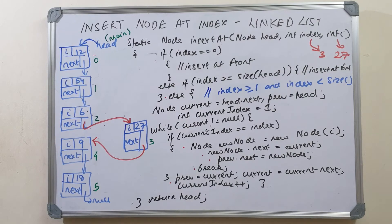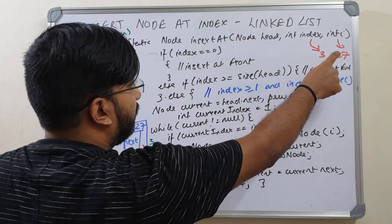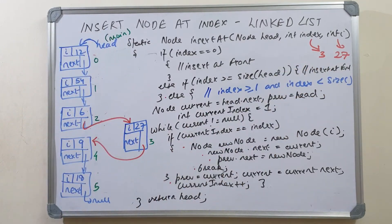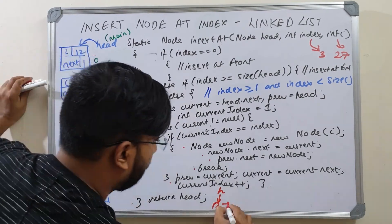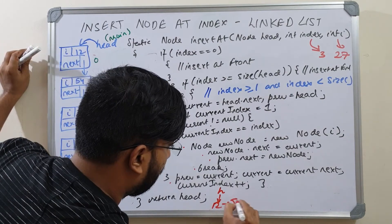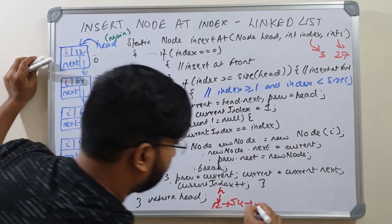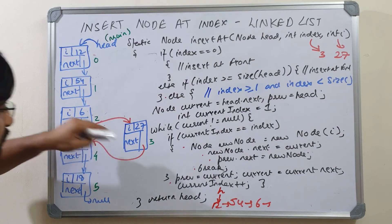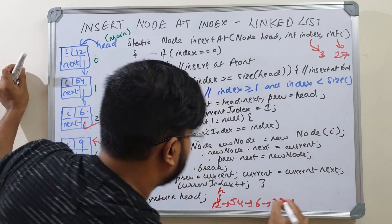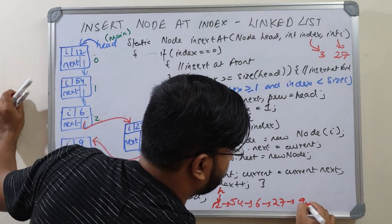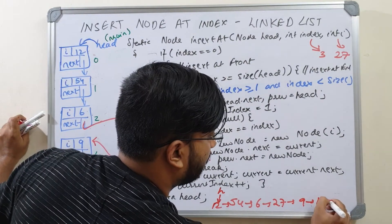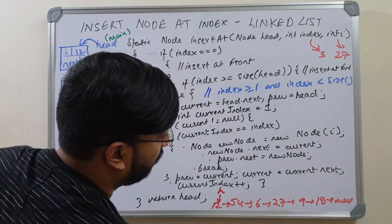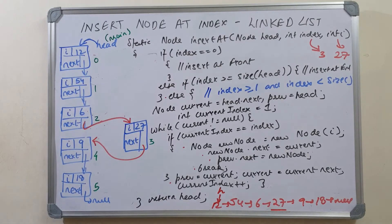Your linked list is now: head pointing to 12, next of 12 is 54, next of 54 is 6, next of 6 is 27, next of 27 is 9, and next of 9 is 18 (and so on). So you were able to insert 27 in the linked list.